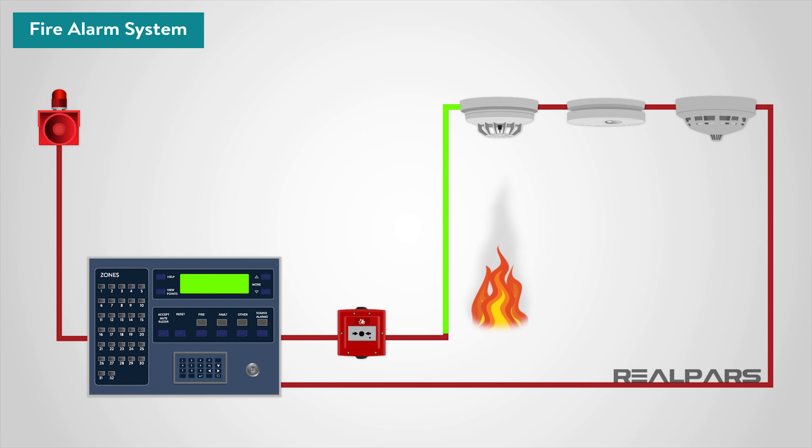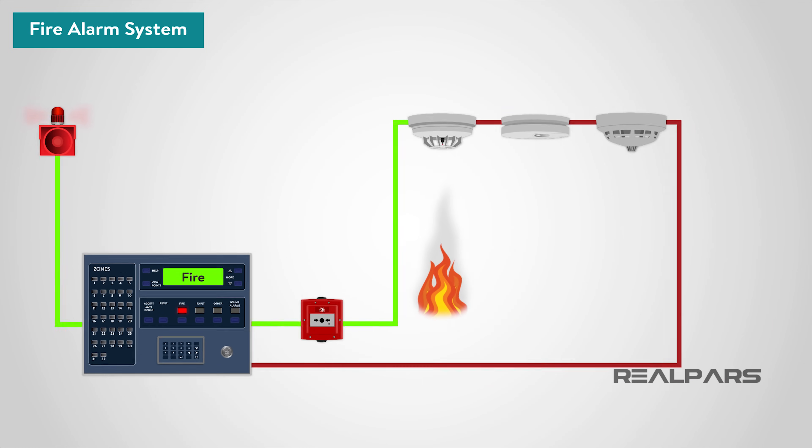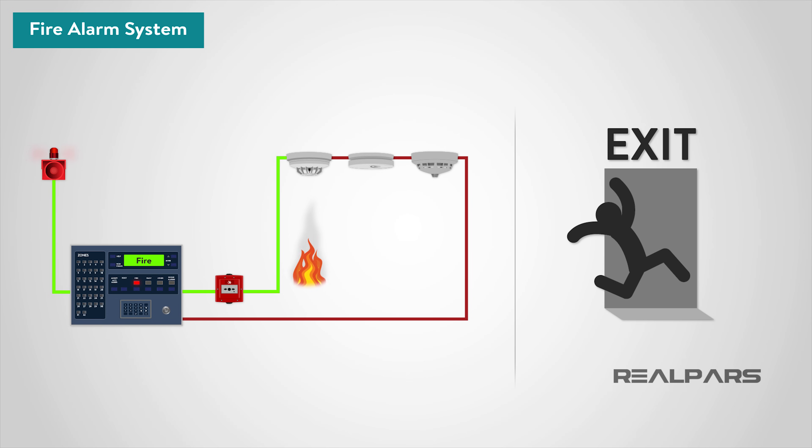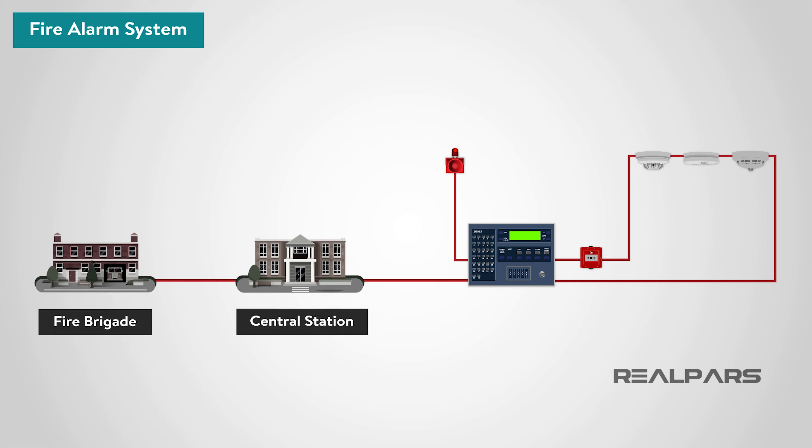Whatever the method of detection is, if the alarm is triggered, sounders will operate to warn people in the building that there may be a fire and to evacuate. The fire alarm system may also incorporate a remote signal system which could then alert the fire brigade via a central station. In this video, we will have a look at the structure and types of the fire alarm systems.